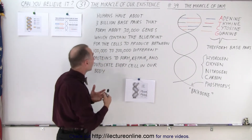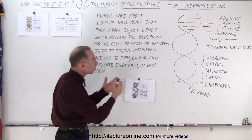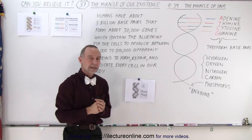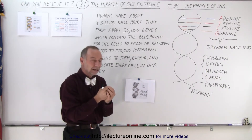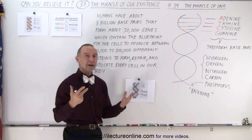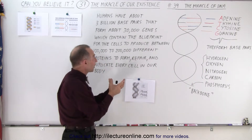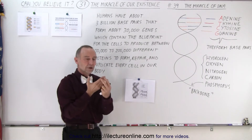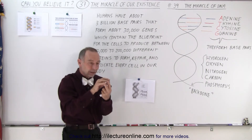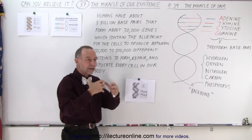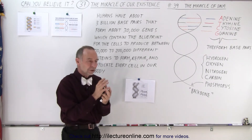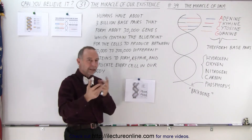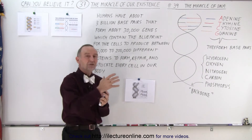For the human being, there are about three billion of those base pairs in the DNA structure in every single cell of our body — every single cell contains all the information of our entire body. Those base pairs make up what we call genes, and the genes are the encoding structures that tell each cell how to reproduce itself, how to make itself, how to make copies of itself. Those genes can be turned on and off depending upon what's necessary in each of the cells.